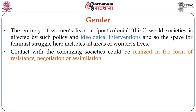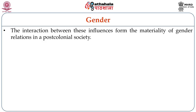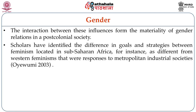Contact with the colonizing societies could be realized in the form of resistance, negotiation or assimilation. Generally, colonial contact resulted in the convergence of three interacting influences: the pre-colonial, the colonial and, through their interaction, the post-colonial. The interaction between these three influences forms the materiality of gender and gender relations in post-colonial societies, and African and Caribbean societies are no exception. Scholars have identified the difference in goals and strategies between feminisms located in sub-Saharan Africa and Western feminisms that were responses to metropolitan industrial societies.